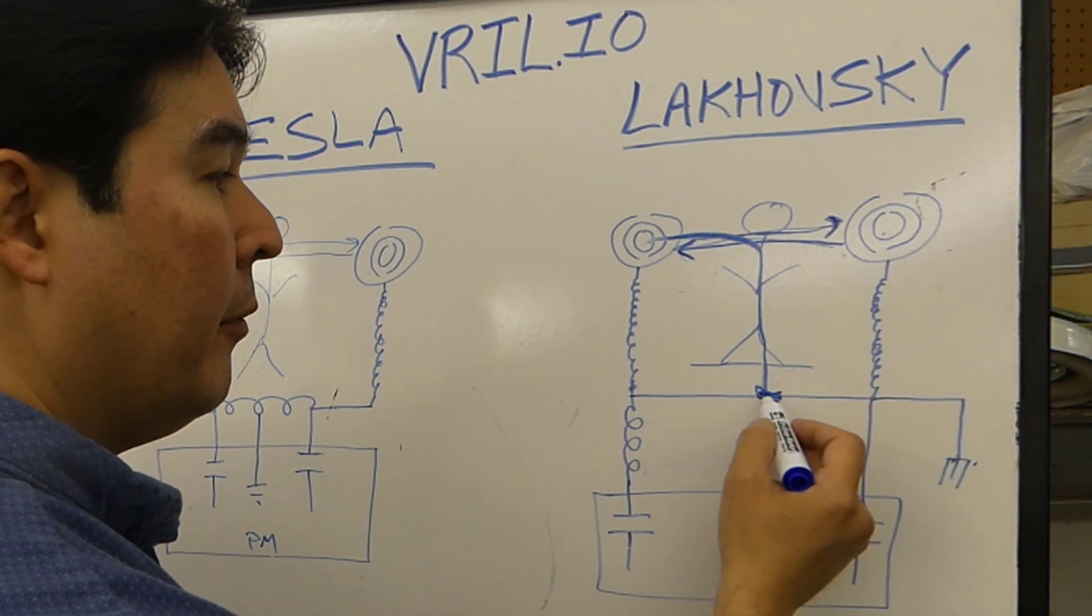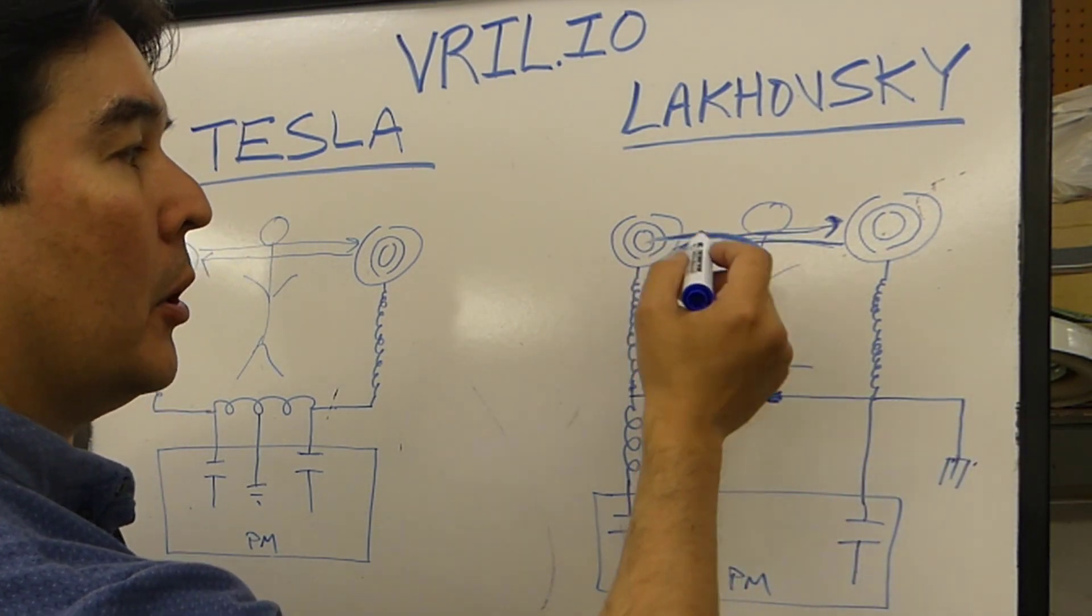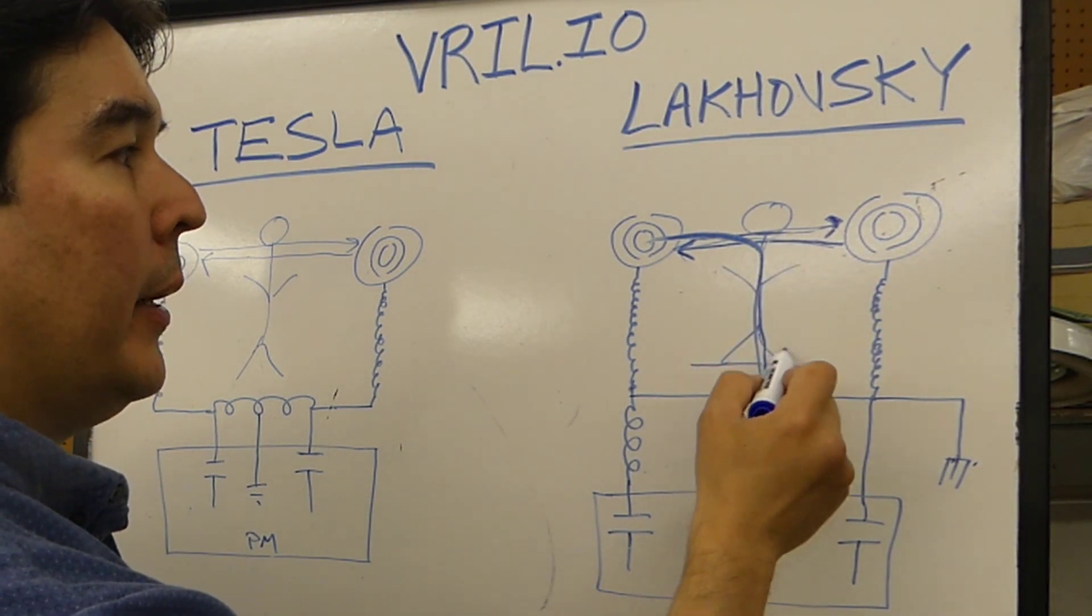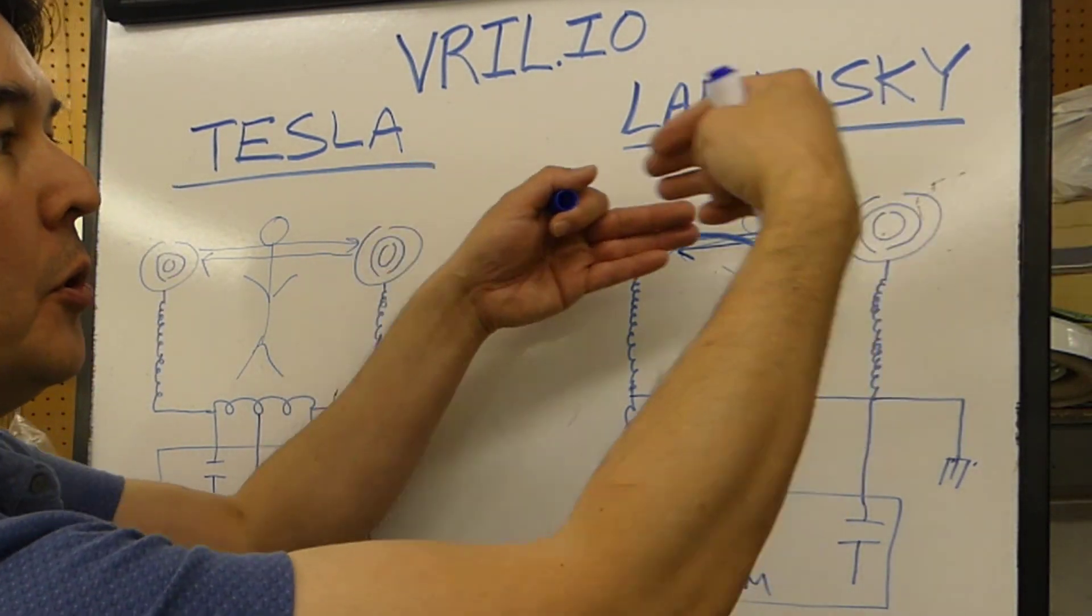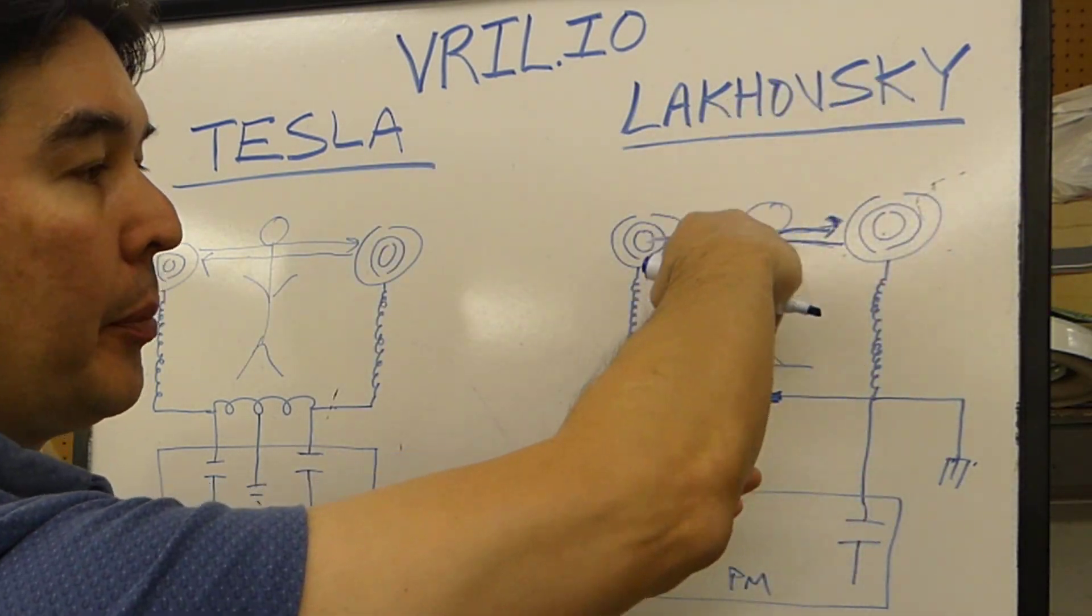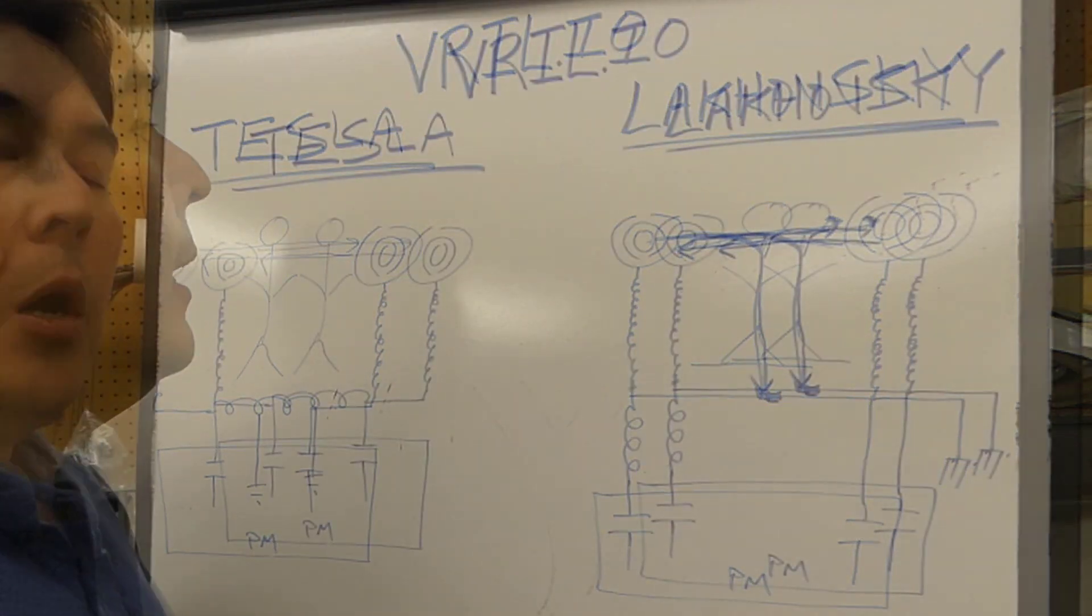You're still kind of getting this Tesla effect where the person is just immersed in this rapidly oscillating field, electrostatic field. This person is experiencing that too, but there's something else that happens. Because of this ground rod, what happens is that some of this potential, roughly half of it makes it to the opposite antenna, and the other half actually is finding a path through the person down to this earth rod,